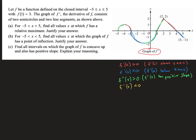Likewise, the second derivative is negative when the slopes on the first derivative graph are negative, because the derivative of the derivative is negative. Now, when we go to analyze a function based on the graph of the derivative, we'll do it very similarly to what we did with the equation — we're going to draw sign lines for the first and second derivative. For the first derivative, we find where it equals zero first.